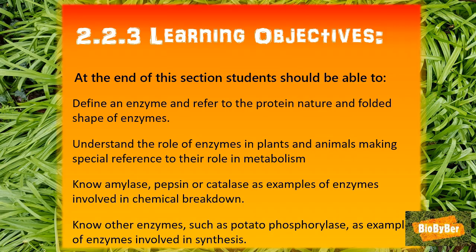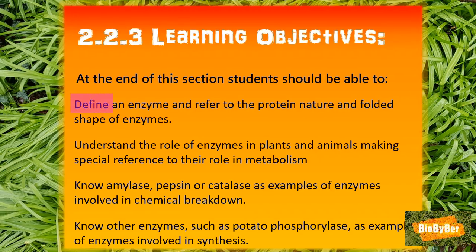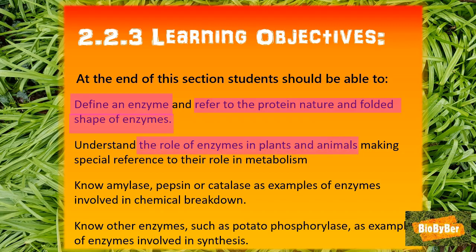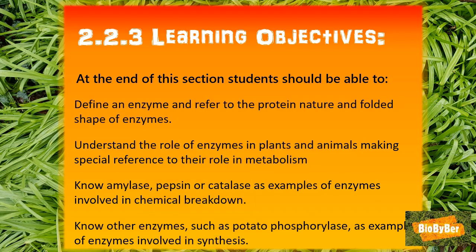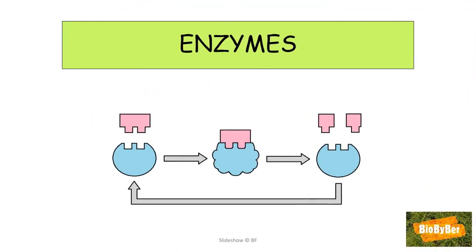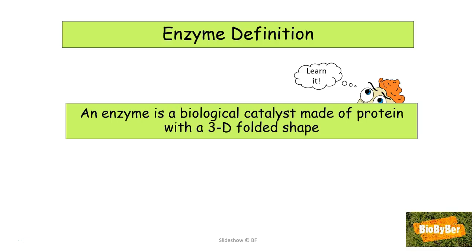Know other enzymes such as potato phosphorylase as examples of enzymes involved in synthesis. What does this actually mean? It's straightforward enough. You have to know the definition of an enzyme and refer to the protein nature and folded shape of enzymes. You have to understand the role of enzymes in plants and animals, making special reference to their role in metabolism. You have to know amylase, pepsin, or catalase as examples of enzymes involved in chemical breakdown or catabolism, and know other enzymes such as potato phosphorylase as examples of enzymes involved in synthesis or anabolism.